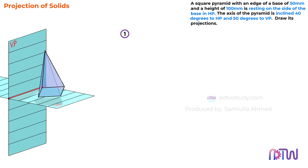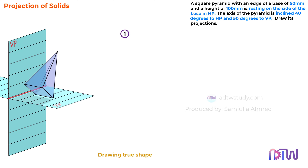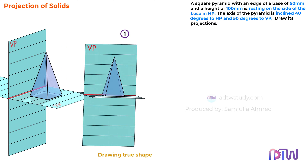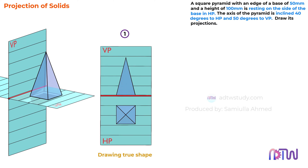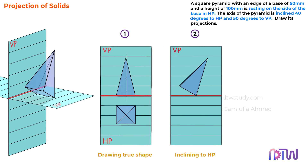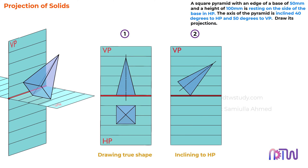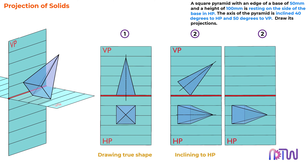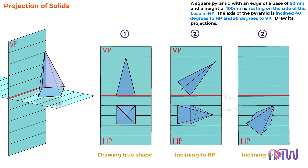To achieve the final output, we can follow three steps. Step 1: Drawing the true shape of the pyramid — we assume the pyramid is resting on HP and draw its front and top views. Step 2: Inclining the pyramid 40 degrees with HP, which alters both the front view and top view. Step 3: We further incline the already inclined pyramid 50 degrees with VP. Following these steps will yield the required final results.